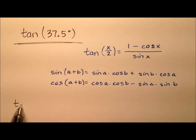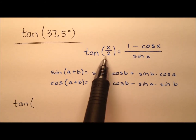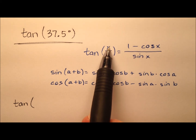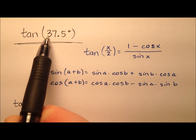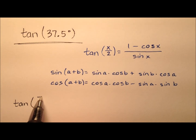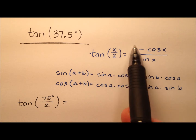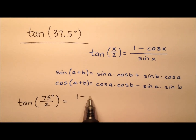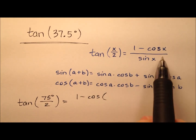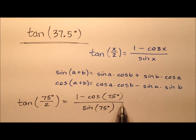So we're going to say that the tangent of 37.5, using this half-angle identity, can be rewritten. We need an angle x that when divided by 2 gives us 37.5 degrees. Well, 37.5 times 2 is 75 degrees. So we'll say the tangent of 75 degrees over 2 equals 1 minus the cosine of 75 degrees, divided by the sine of 75 degrees.